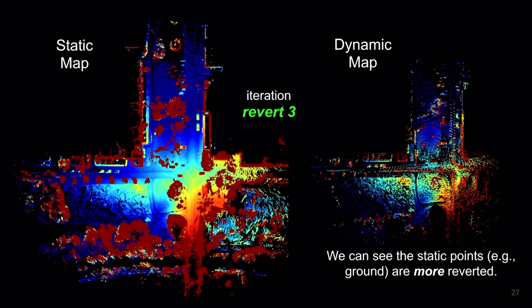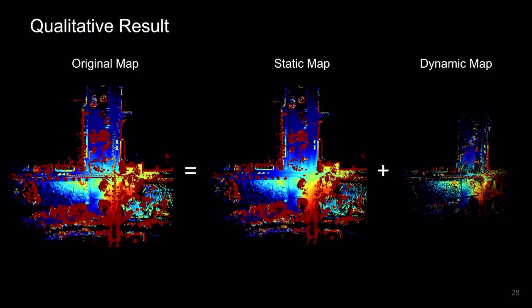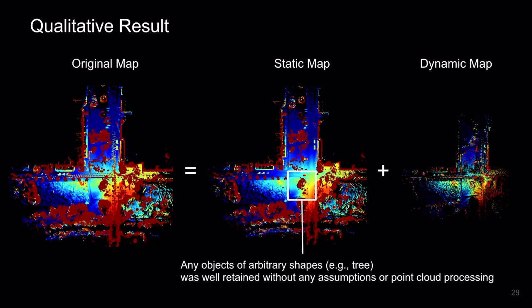And finally, we are showing here the third revert result. We can see the static points, such as ground, are more reverted. This is our final output. The original map is divided into static map and dynamic map like this. In our algorithm, we do not assume any shape assumptions or point pre-processing, such as region growing or fitting. But we can see any objects of arbitrary shapes, such as trees, were well retained without any assumptions or point cloud processing.